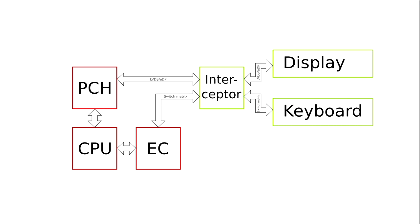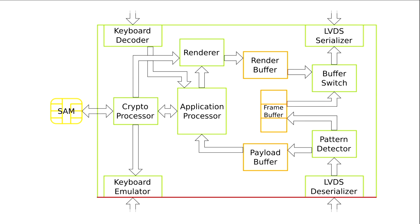Now, how would you actually make that work? This interceptor needs to be able to process these really high-speed display buses like LVDS and do in-flight transformation on it — that's a pretty hard task. And we want it to be not too complex so we can actually secure the thing itself, so we don't just replace one huge attack surface with another huge attack surface. The most obvious way to do this would be to use an FPGA for most of the stuff, because these things are really good at handling large, high-bandwidth, high-frequency data like a display bus.